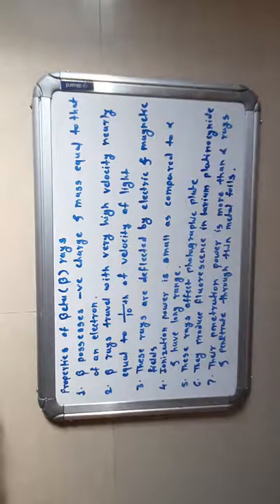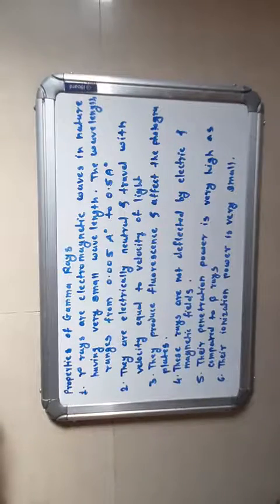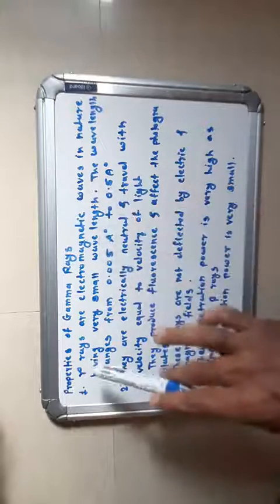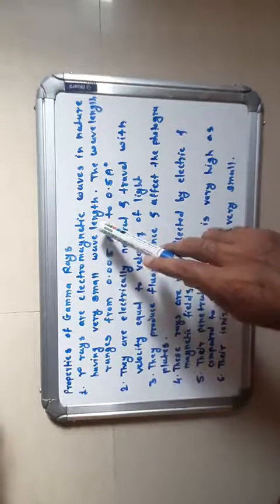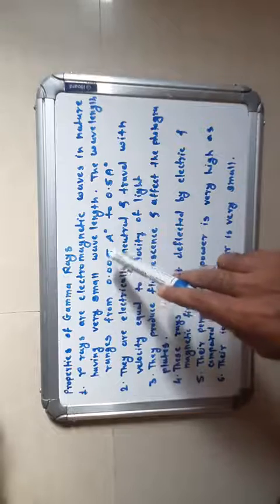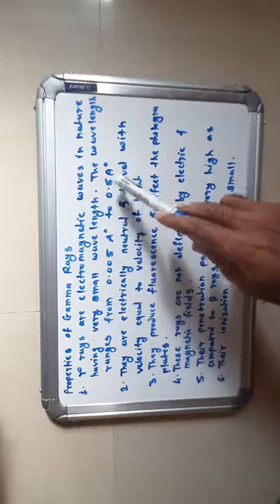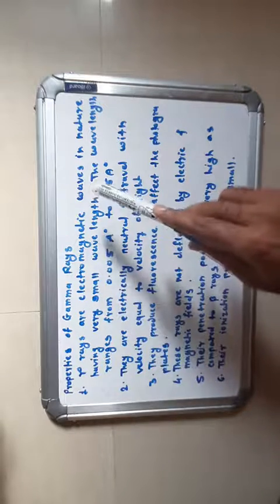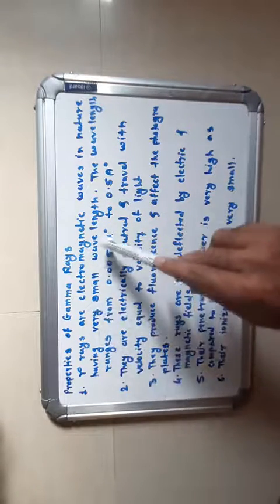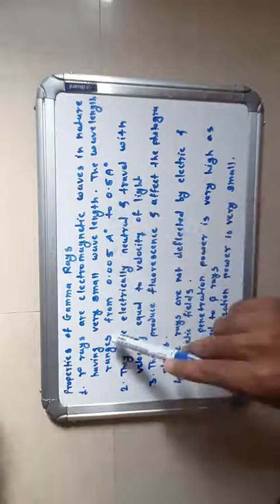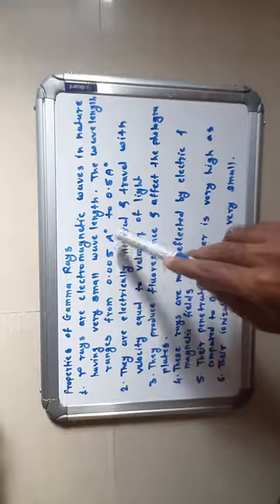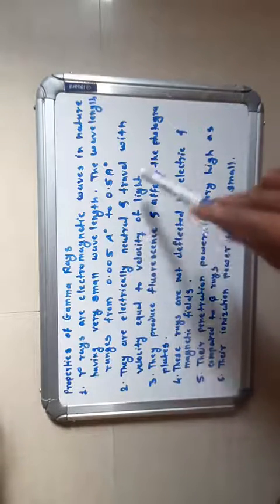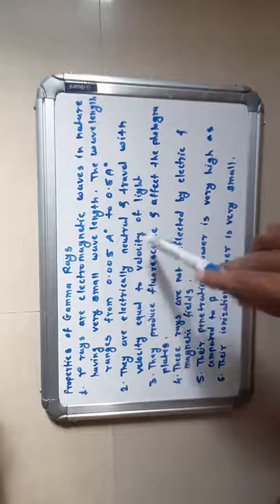Properties of gamma rays: First — gamma rays are electromagnetic waves in nature, having a very small wavelength ranging from 0.005 Å to 0.5 Å. Second — they are electrically neutral and travel with a velocity equal to the velocity of light.